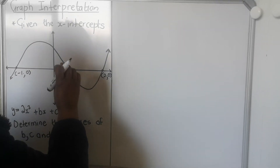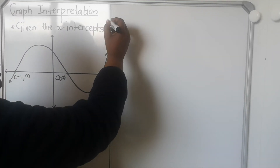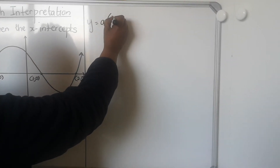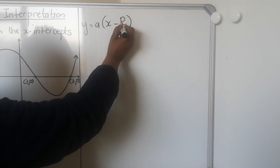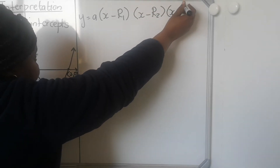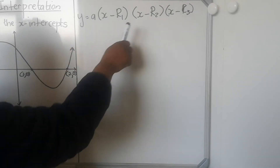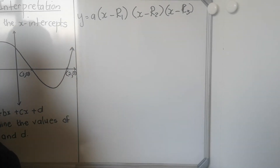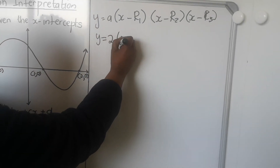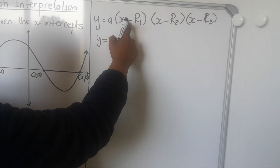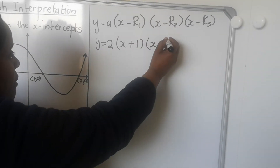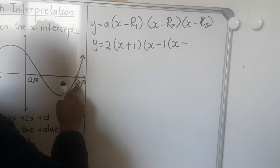What you start with is quite similar to a parabola that we did in grade 11. The formula is y is equal to a times (x minus r1), where r1 is the intercept, times (x minus r2) times (x minus r3). Because there are three intercepts, you'll have all three of them. From the formula you can substitute for a. So you'll have y is equal to 2, and x minus negative 1 — the minus is from the formula — and then (x minus 1) and (x minus 2) from the intercepts.